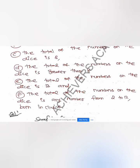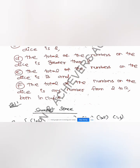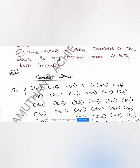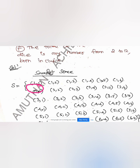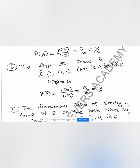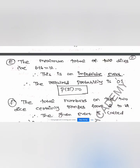The total number on two dice can be at most 12. The minimum is 2 and the maximum is 12. So if the question asks for a total of 13, is that possible? No — you cannot get a sum of 13 with two dice. That is an impossible event.